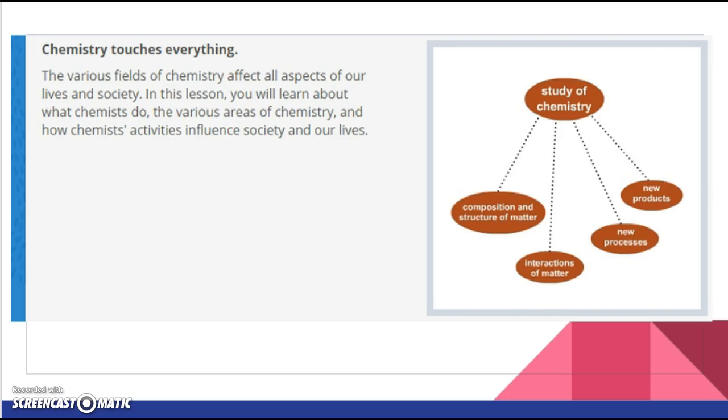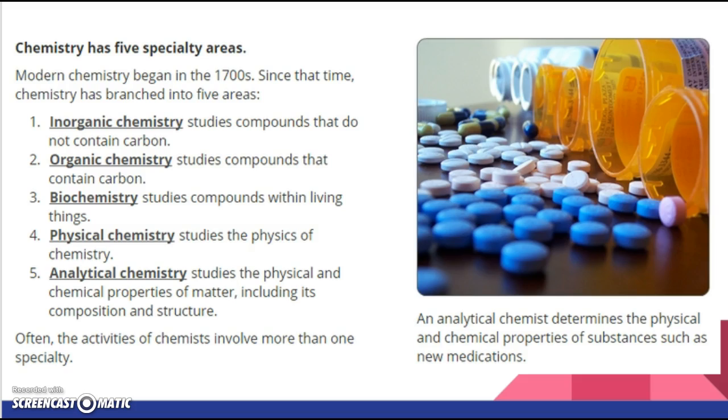Obviously, it's other stuff too, but chemistry is the basis of pretty much everything. Chemistry has five specialty areas, and we're going to talk more in Unit 2 about the history of chemistry, but we're just going to kind of start out with things that are around us every day. There's five main branches of chemistry. So if you go into college and you want to be a chemist, you would pick a branch of chemistry. For example, inorganic chemistry, which is compounds that do not contain carbon, which is an element, and we'll talk about that one later.